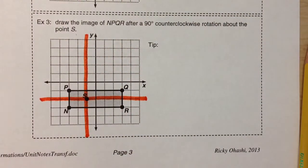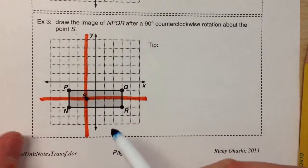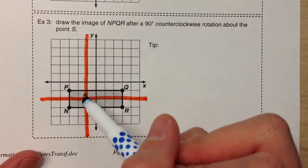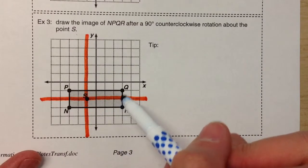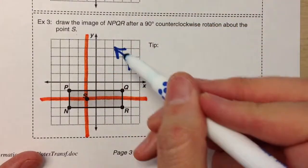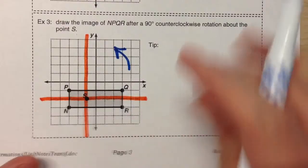So make this point your new origin by making a fake x-axis here and a fake y-axis here. Now, we can rotate the shape about this fake set of axes and it would be easier to do. So, this point Q is four steps to the right and one step up. We're rotating counterclockwise. I like to put the arrow there to remind me. Four right, one up.